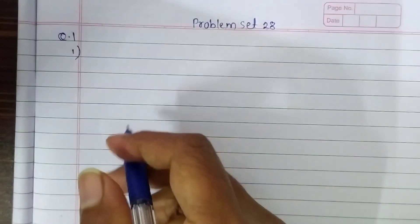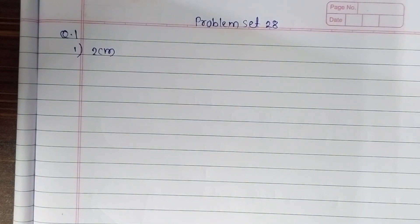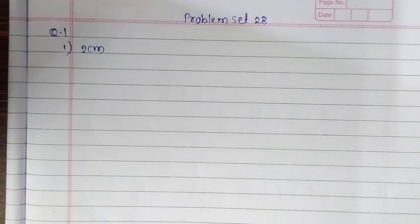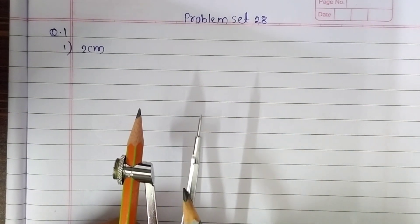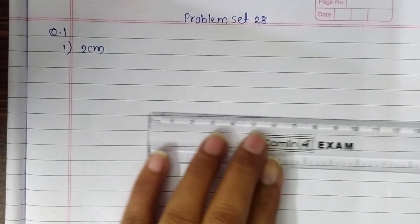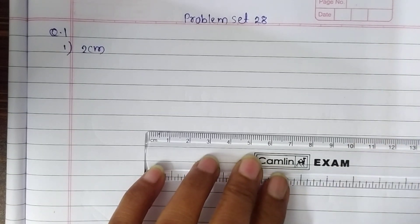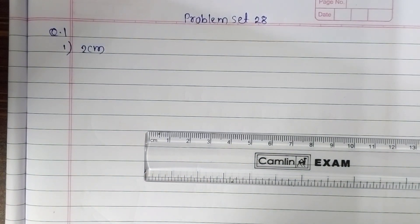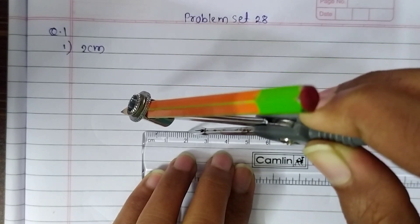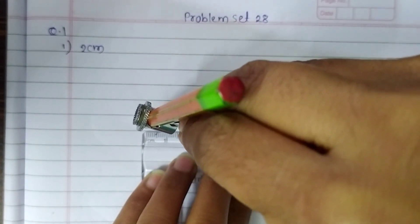The first sub-question is 2 centimeters. First of all, we have to take an equal distance between the metal point of the compass and the pencil point. The distance given to us is 2 centimeters. Let's take a 2 centimeter distance between the metal point and the pencil point like this. Here is 2 centimeters. Place the metal point on the 2 centimeter line and adjust like this.